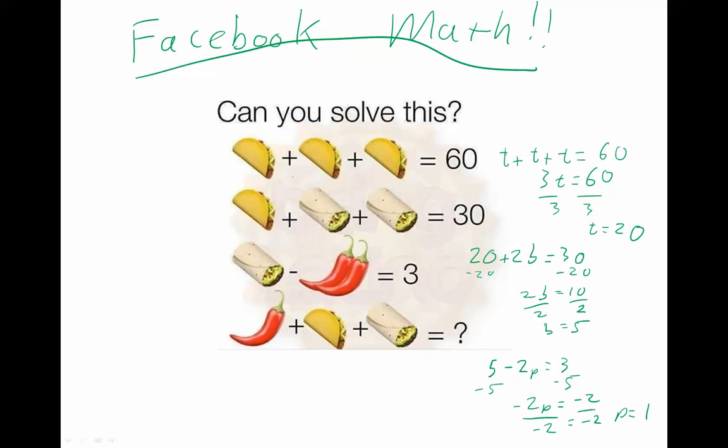So we have the values for pepper, burrito, and taco. Which, if we come back to the final equation, notice that this is just 1p. So this is 1 plus taco, which is 20, plus burrito, which is 5. Therefore, it is 26.